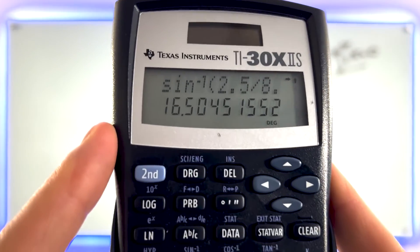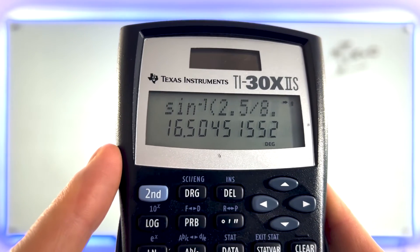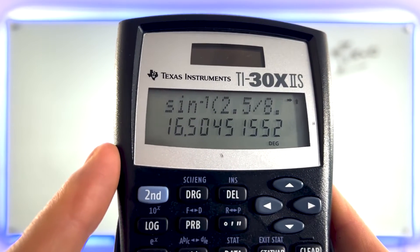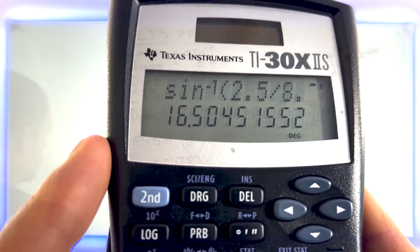We need to round this to the nearest whole degree, so 0.5 or higher goes up. This rounds to 17 degrees. Theta is equal to 17 degrees.